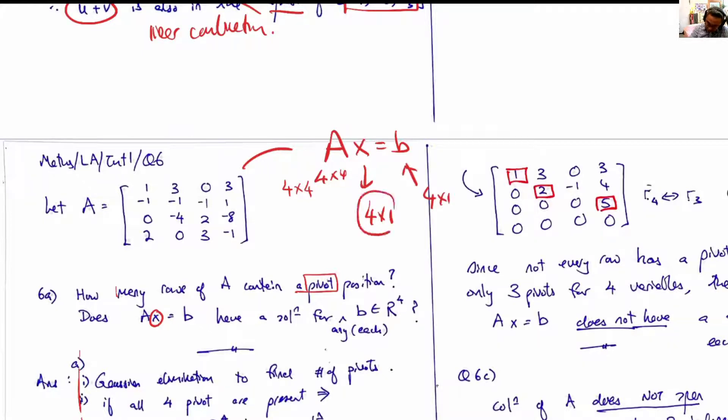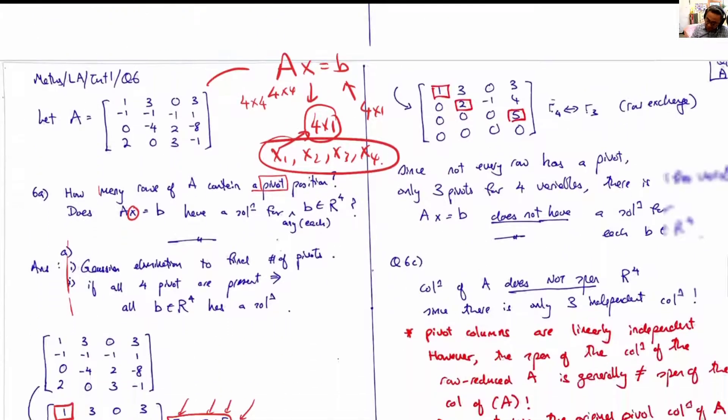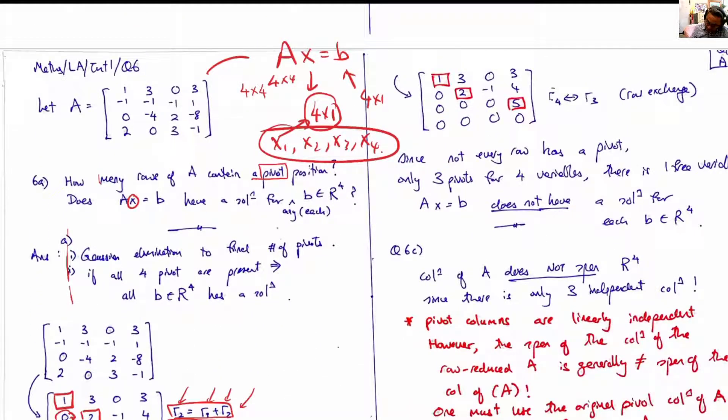There are four elements in x, the unknown vector, and each one of them—let's call them x1, x2, x3, and x4—are the variables that we need to find. So there are four variables, and hence, because there are only three pivots plus four variables, there is one free variable.